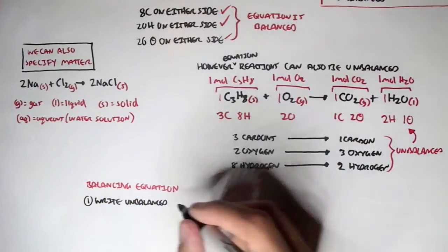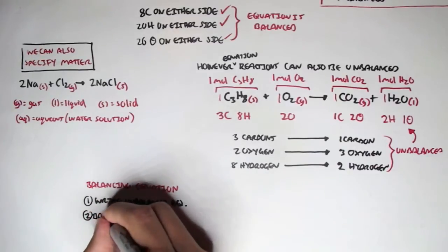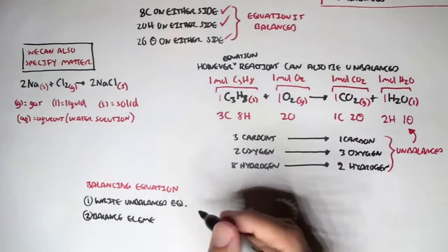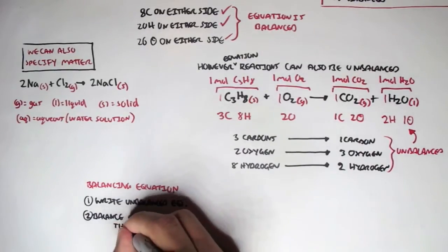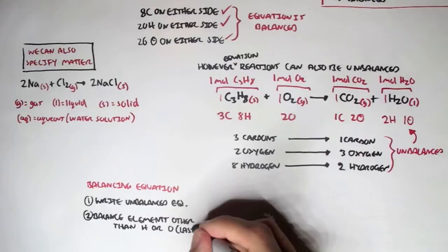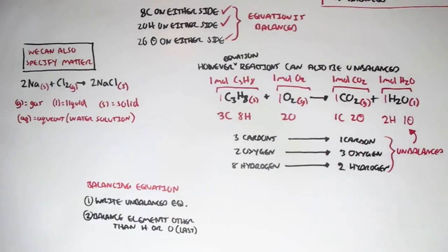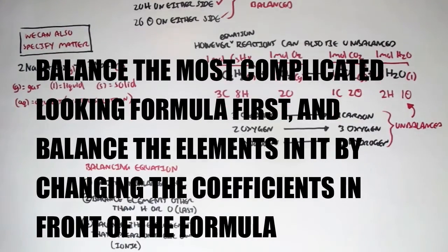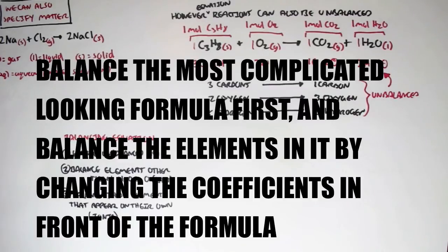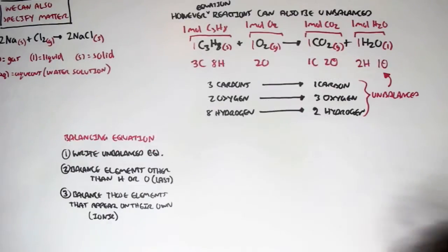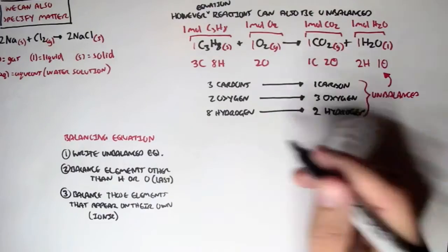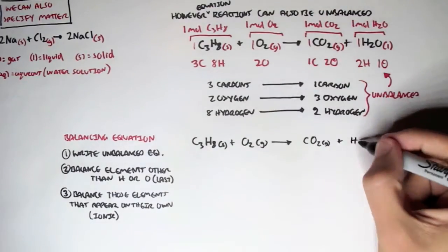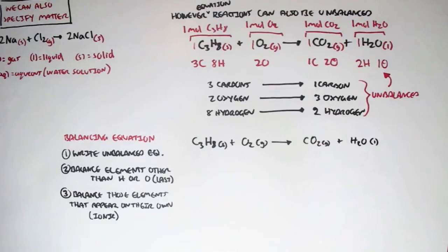So what we can do is balance this chemical equation — a process known as balancing equations. There are a few rules to follow: first, write out the unbalanced equation; then balance elements other than hydrogen or oxygen first, leaving those last because they're usually the easiest to balance; and start with the most complicated-looking formula, balancing its elements by changing the coefficient in front of the formulas. Let's write the unbalanced equation again: propane and oxygen as reactants, one molecule of each, yielding one molecule of carbon dioxide and one molecule of H2O.